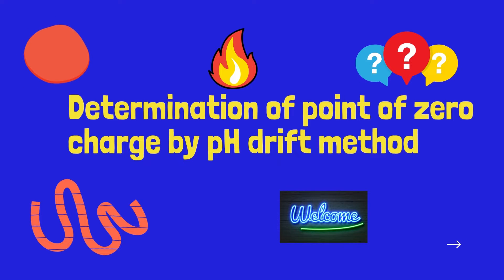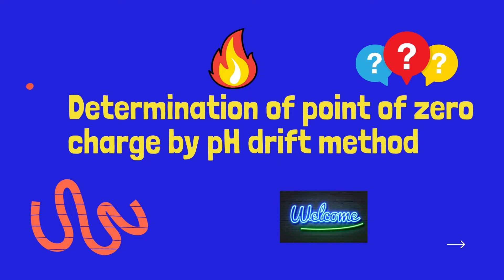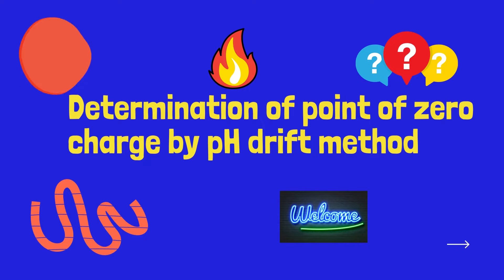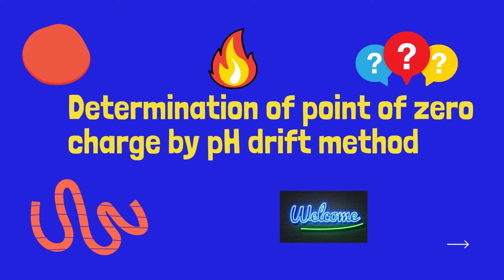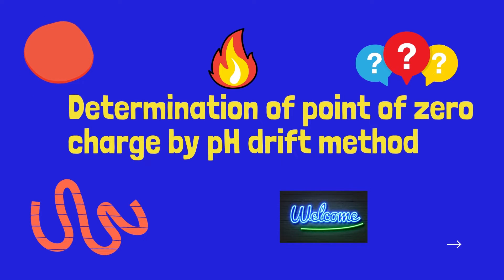Therefore, in this video, I would like to explain how to determine point of zero charge, or surface charge, by the pH drift method. Determination of point of zero charge using Zeta potential has already been published on my channel. Those who are interested can have a look at those videos.